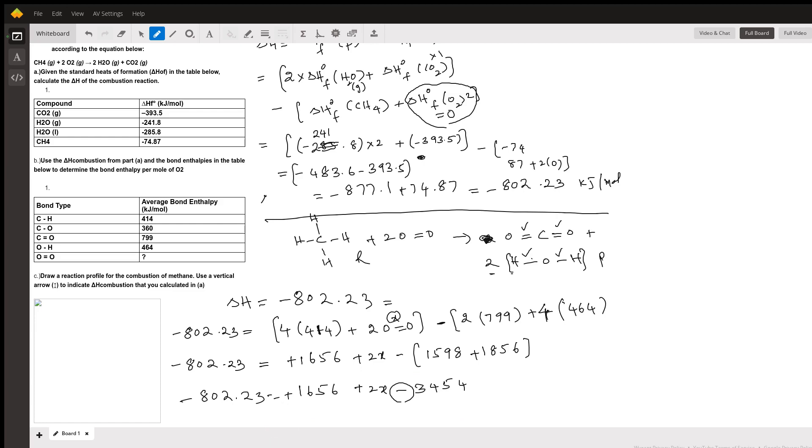So if I do that math. So that gives me minus negative 802.23 equals to 1798. If I do the math for these two, that will give me 1798 with a negative sign. So that gives me plus 2x plus 2x.